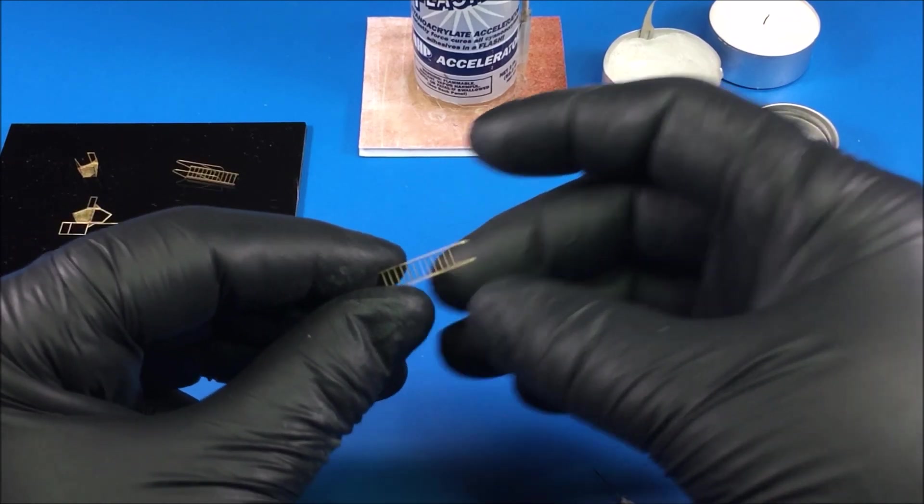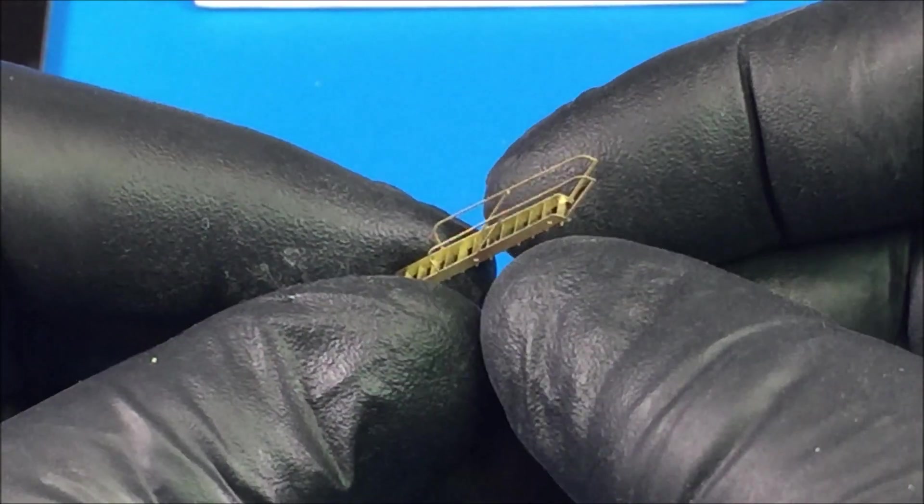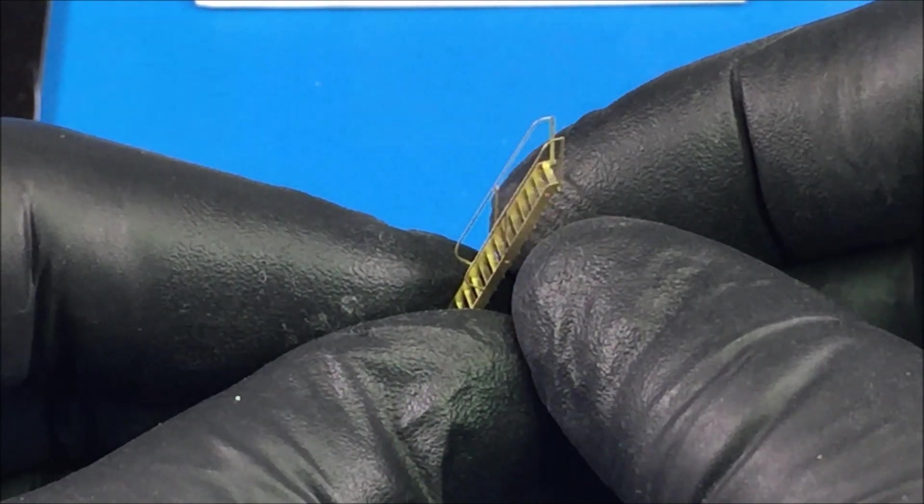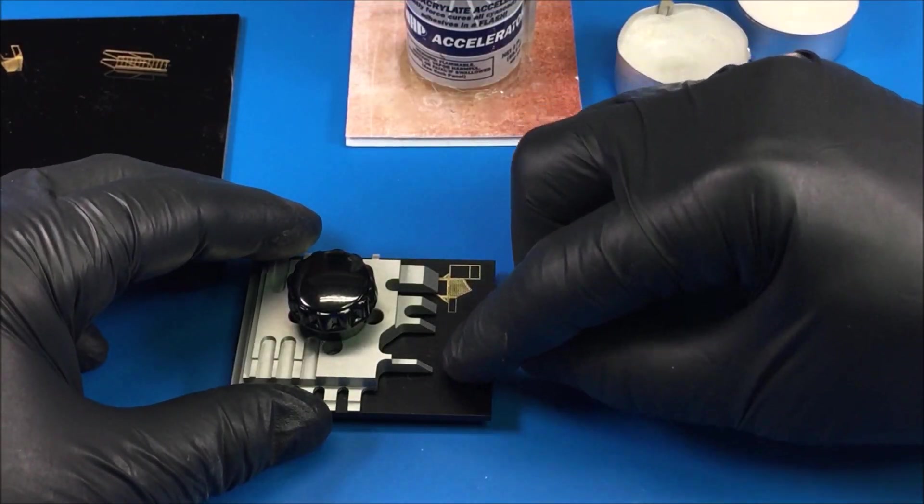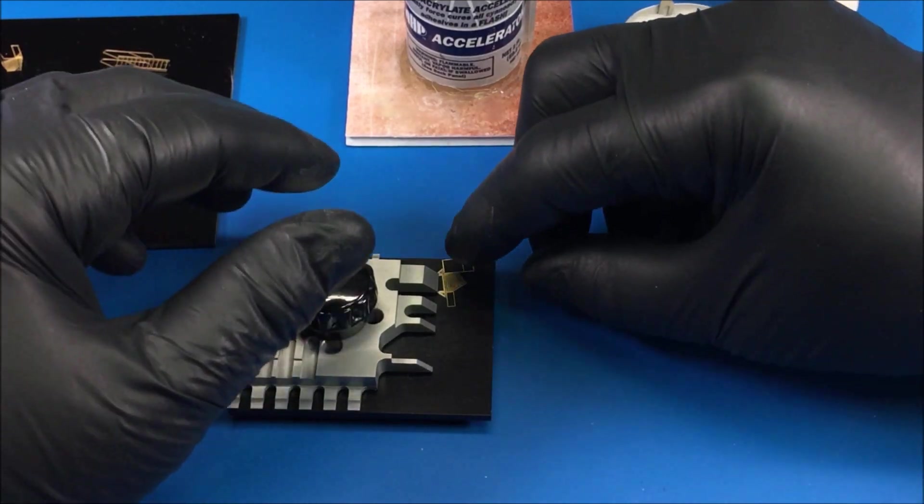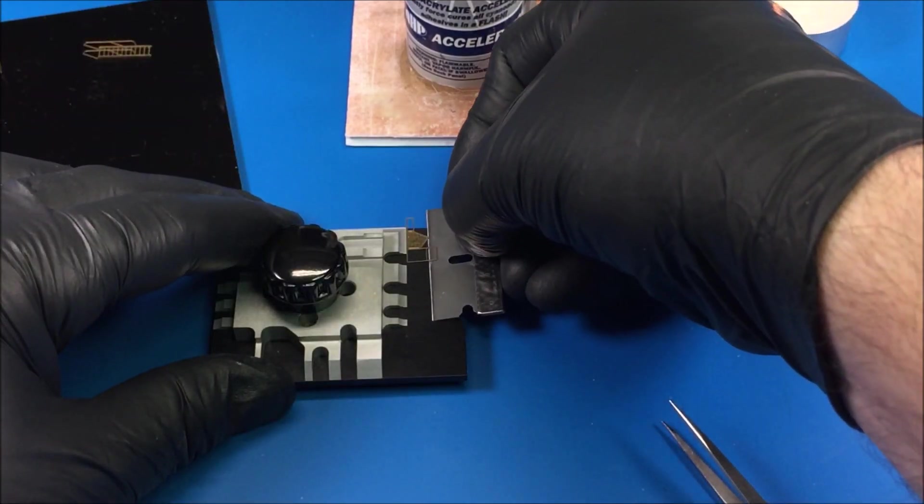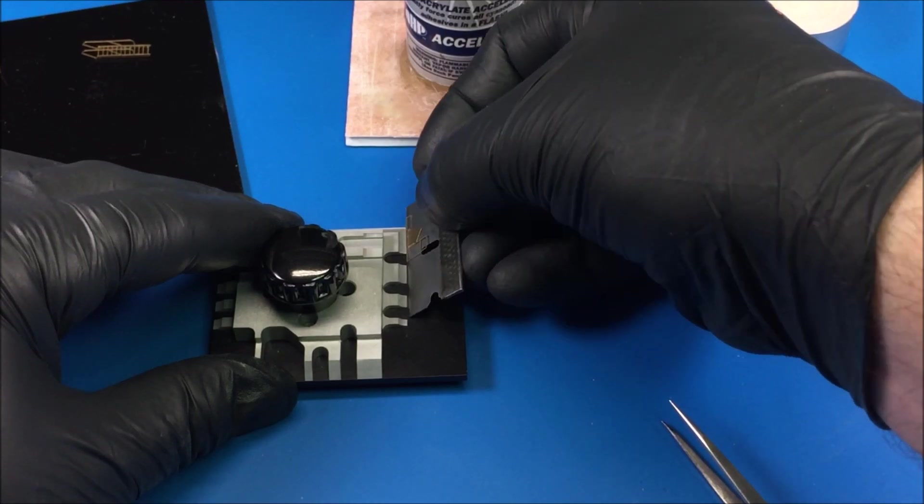Just take some of my thin CA on this needle here, then I just add a dab to each corner and that'll hold that stair in place. And there is the finished piece. That's pretty cool.